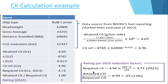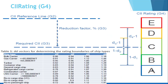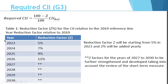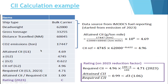Now we have to calculate G3 — the required CII. The required CII is calculated based on the year. For the year 2023, the reduction factor is 5%. Applying this to the reference of 4.96, the required CII comes out to 4.71. So for the year 2023, the required CII is 4.71.